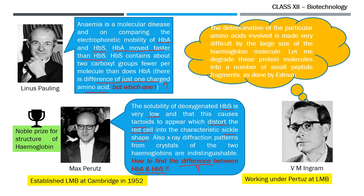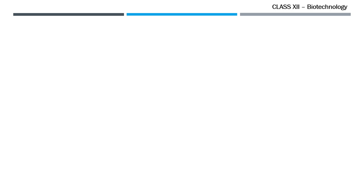Max Perutz assigned Ingram the task of inserting a single heavy atom into the unique position of the hemoglobin molecule and then crystallizing that derivative. Ingram successfully completed the task. Just then, Tony Ellison brought him samples of sickle cell anemia hemoglobin to study some 3D structures at LMB. Ingram generated interest in the unanswerable question of the difference between the two hemoglobins. He thought: let me degrade these protein molecules into a number of small peptide fragments, just as Edmund had done in his Edman degradation method. With this strategy, Ingram devised the peptide mapping technique.